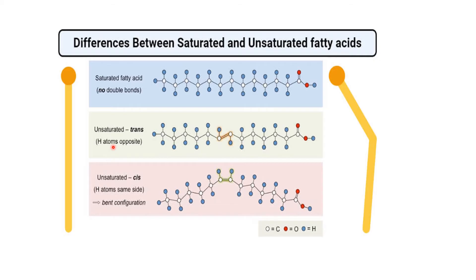In unsaturated fatty acids, if hydrogen atoms are on opposite sides of the double bond, it is a trans configuration. If hydrogen atoms are on the same side, it is a cis configuration. The cis configuration causes the fatty acid chain to have a bent shape, which is important for phospholipid membrane structure.